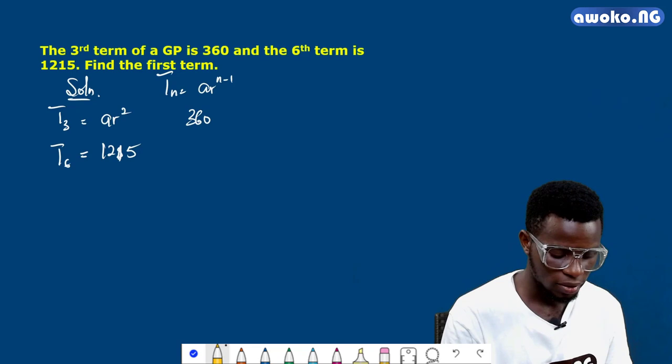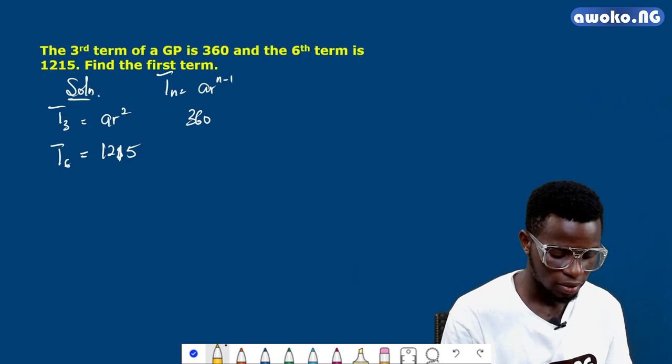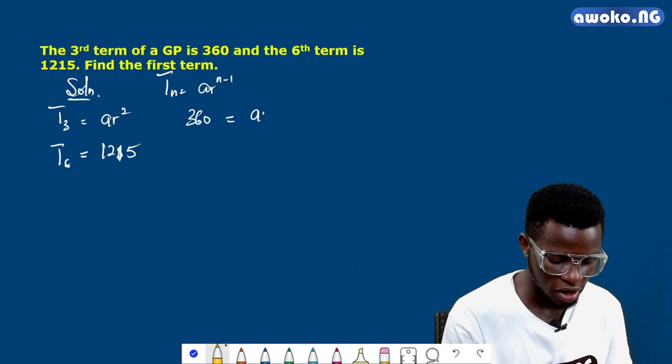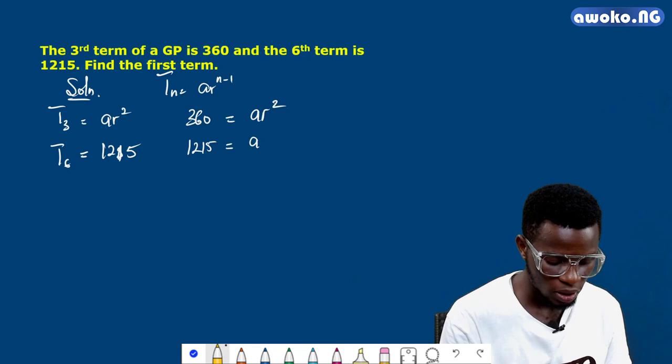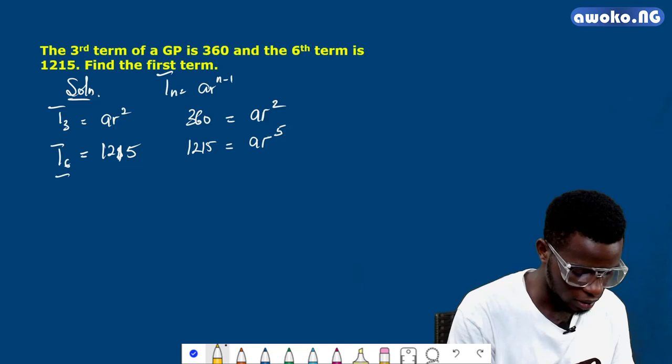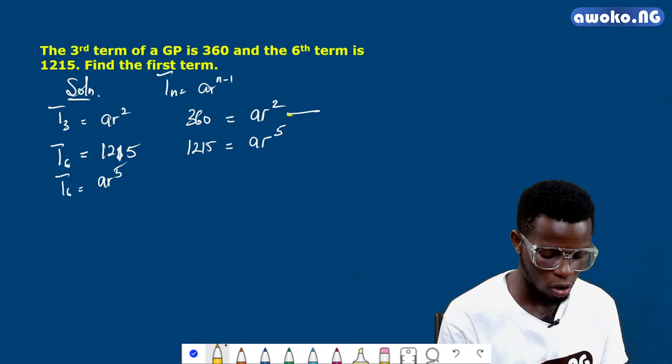They already gave us the value for T_3 and T_6, so we can have 360 equals ar² and 1215 equals ar⁵. We can decide to divide equation 2 by 1.